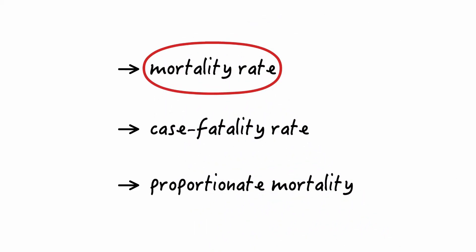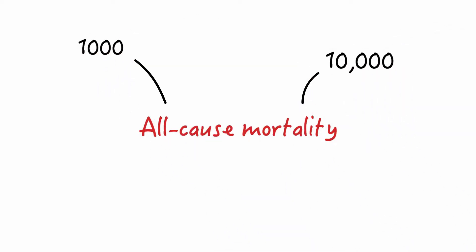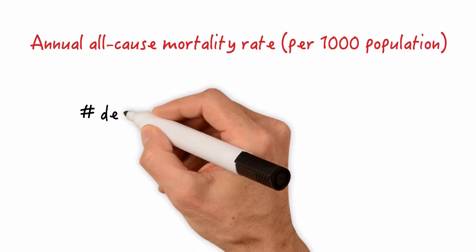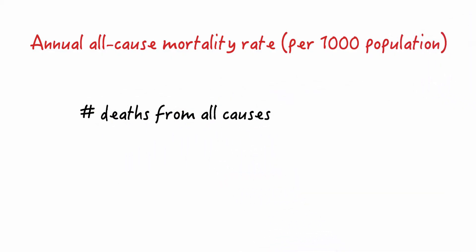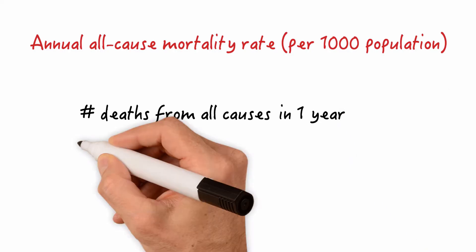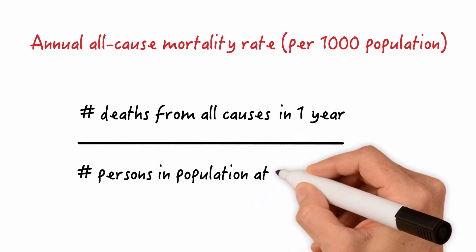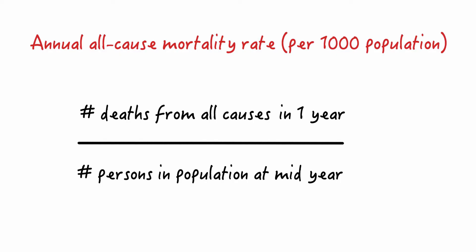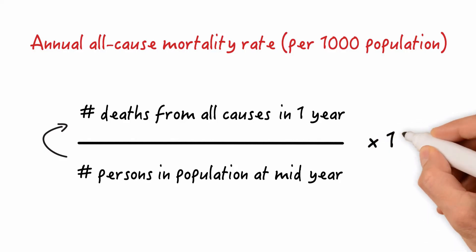There are a couple of ways to approach mortality rates. The most obvious is the all-cause mortality rate, which can be expressed per 1,000, 10,000, or 100,000 population. The annual all-cause mortality takes the number of deaths from all causes in a specified time period — let's say one year — and divides that by the number of all persons in the population at mid-year. Why mid-year? Because the population changes over time. Remember, everyone in the denominator should be eligible to become part of the numerator. To get the number per 1,000 population, we multiply by 1,000.